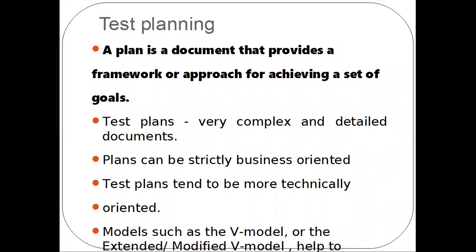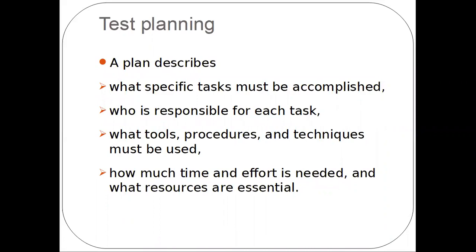We can also have some models, such as the B model or the extended or modified B model, that will help to plan the activities based on the starting stage of the planning phase. Based on the set of goals, the plan describes specific tasks to be accomplished, includes who is going to take complete ownership for the task, what forms, procedures, and techniques are to be used, how much time is needed, and what resources are available to perform the tasks.